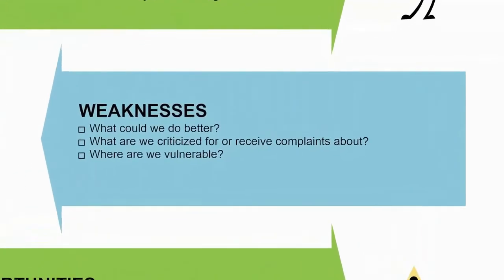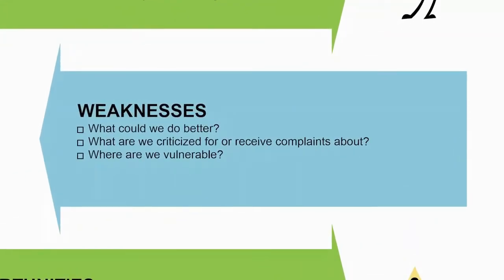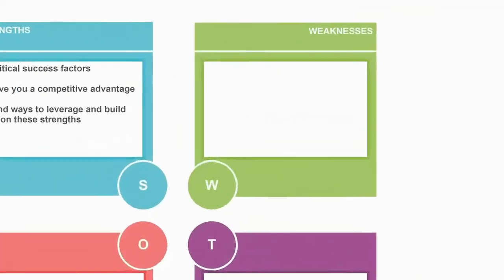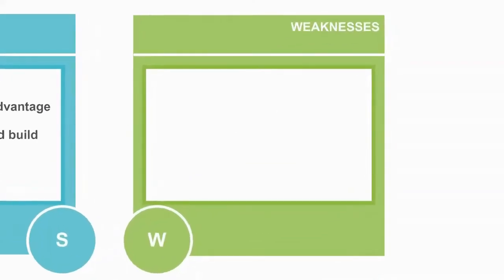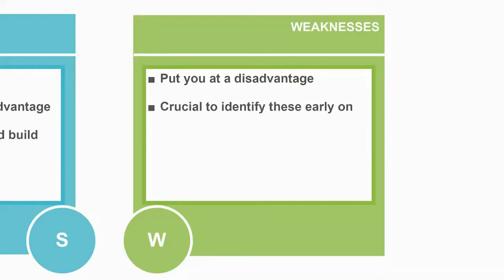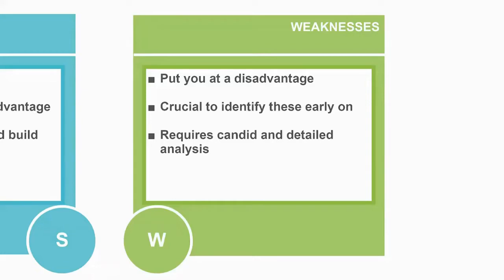Next, you will want to identify ways to improve on your weaknesses. Weaknesses are factors that put you at a disadvantage to your competitors. Figuring out what these weaknesses are and taking actions to address them before they hurt your business is essential. This stage requires a detailed and candid analysis of what is going wrong within your organization.